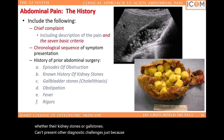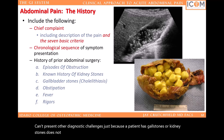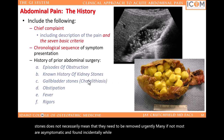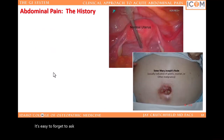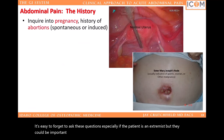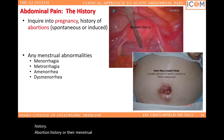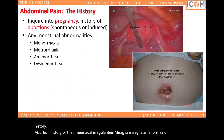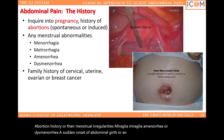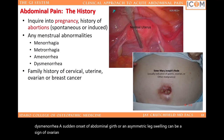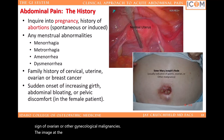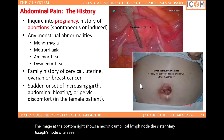Get into the habit of asking your female patients about their pregnancy history, abortion history, or menstrual irregularities — menorrhagia, metrorrhagia, amenorrhea, or dysmenorrhea. A sudden onset of abdominal girth or asymmetric leg swelling can be a sign of ovarian or other gynecological malignancies. The image at the bottom right shows a necrotic umbilical lymph node — the Sister Mary Joseph's node — often seen in ovarian, gastric, or other intra-abdominal malignancies. This clinical sign was named after Sister Mary Joseph Dempsey, who died in 1939 and was a surgical assistant of Dr. William James Mayo of the Mayo Clinic. She first noticed the association between abdominal pelvic malignancies and metastatic abdominal nodules.